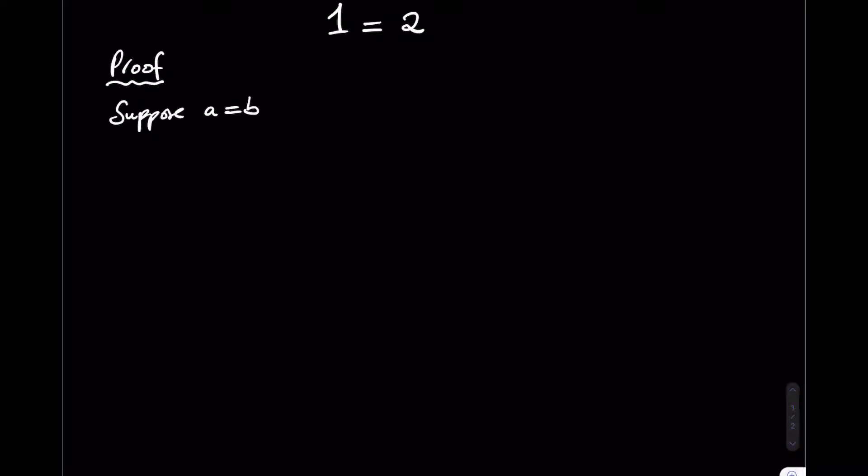Now I'm going to multiply both sides of this equation by A to give me A squared is equal to AB. OK, the next step is to subtract B squared from both sides, giving me A squared minus B squared is equal to AB minus B squared.